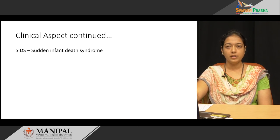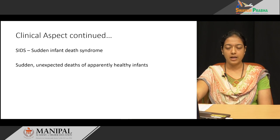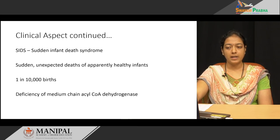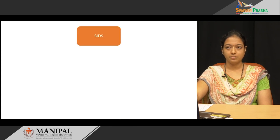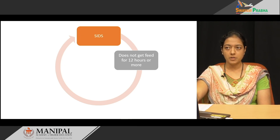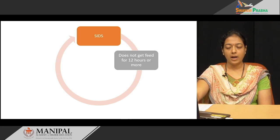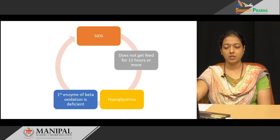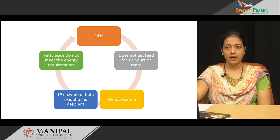An important disease involving medium chain fatty acids is SIDS — Sudden Infant Death Syndrome. As the name suggests, it is the sudden unexpected death of an apparently healthy infant. The incidence is 1 in 10,000 births. The deficiency is mainly in medium-chain acyl-CoA dehydrogenase, which is the first enzyme of beta oxidation. Babies who do not receive feed for 12 hours or more develop hypoglycemia; when carbohydrates are depleted, fatty acids must provide energy, but since the first enzyme of beta oxidation is deficient, the fatty acids cannot meet the energy requirement, leading to sudden death.